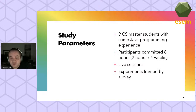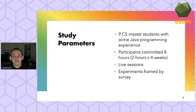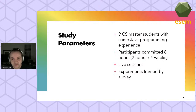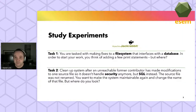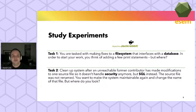We had nine CS master students with at least one year of Java programming experience in academic or industrial settings as participants. Each participant committed eight hours total, distributed over four weeks with two hours per week, and our sessions were live so we could have more timing accuracy. Our survey collected data before the study experiments — such as pre-existing experience — and then impressions and observations after the experiments concluded.